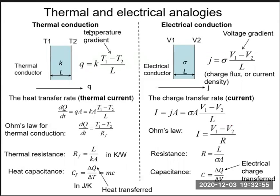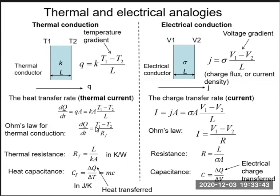Thermal conduction is analogous to electrical conduction. For example, temperature is analogous to voltage, thermal conductivity is analogous to electrical conductivity sigma, and heat flux Q is analogous to charge flux or current density J. We also have Ohm's law for thermal conduction: dQ/dt, which is the thermal current, equals T1 minus T2 divided by RF, the thermal resistance.